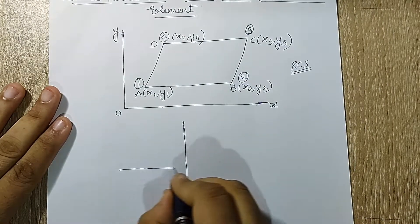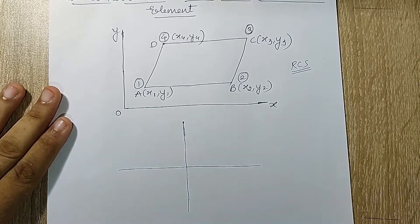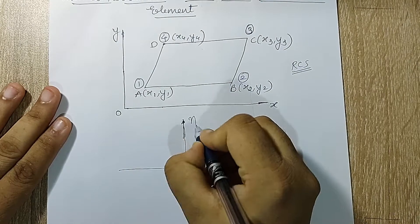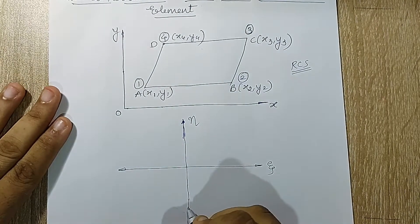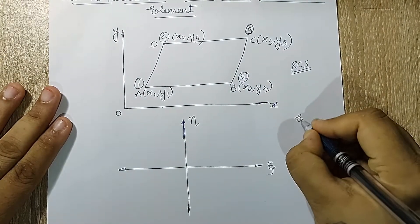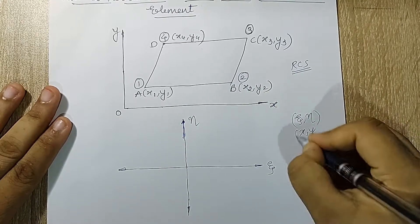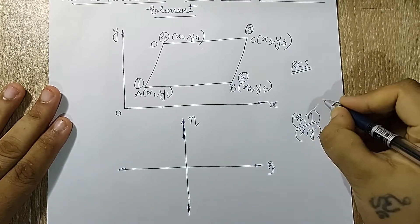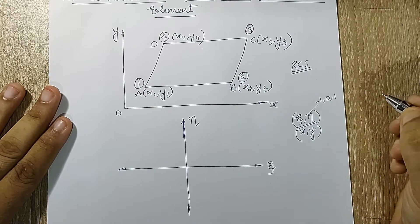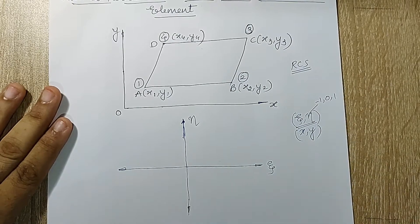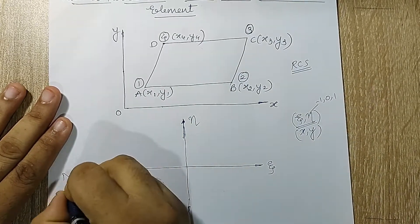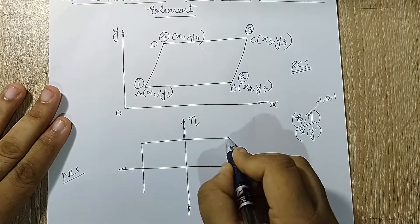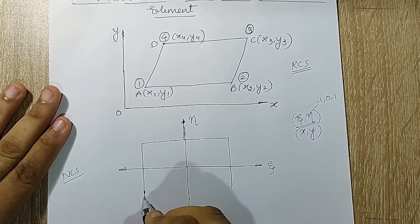For that I'll give you a very simple technique. This will be my zeta coordinate and this will be my eta coordinate. We should always remember that zeta and eta correspond to x and y respectively, and in the zeta-eta coordinate system we are going to make use of only three numbers: minus one, zero, and one. Let's start drawing this quadrilateral in the natural coordinate system.